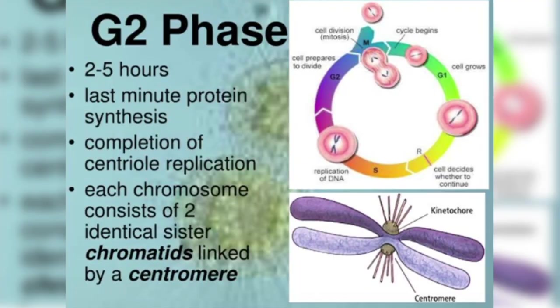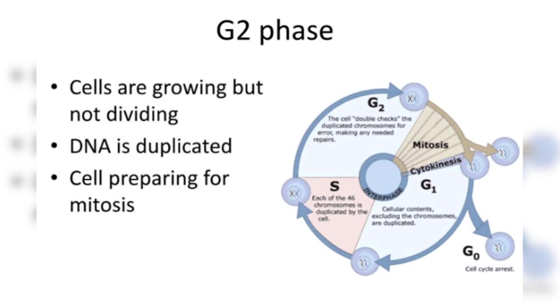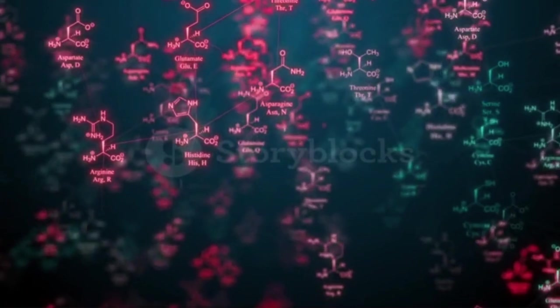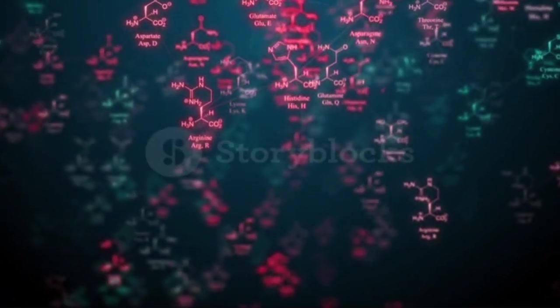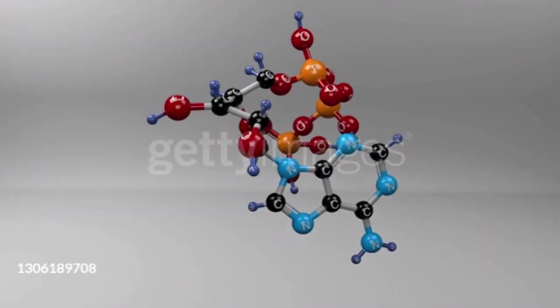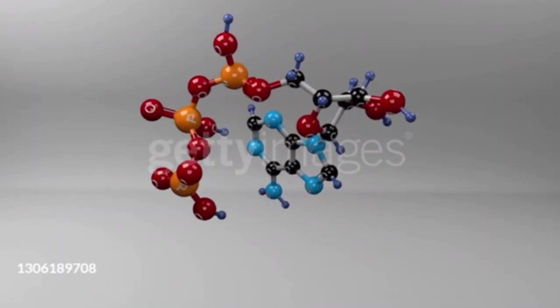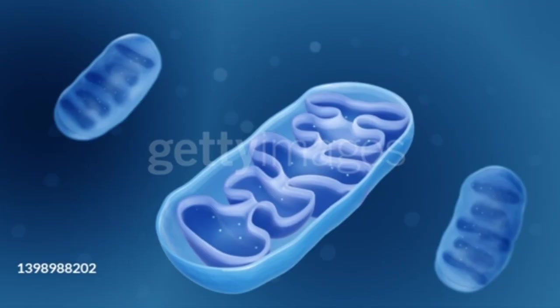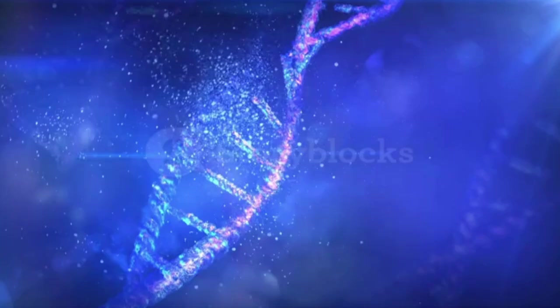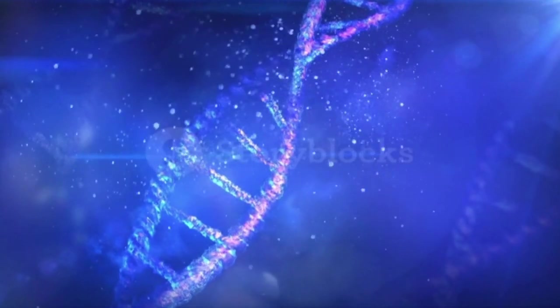G2 phase, Gap 2, post-synthetic, pre-mitotic, second growth phase, final preparation. Increase in nuclear volume. 1. Synthesis of spindle fiber. 2. Synthesis of tubulin protein. 3. Synthesis of all three types of RNA molecules. 4. Synthesis and storage of ATP molecules; 30 ATP required to pull one chromosome. 5. Duplication of mitochondria and plastids. 6. Damaged DNA is repaired in G2.